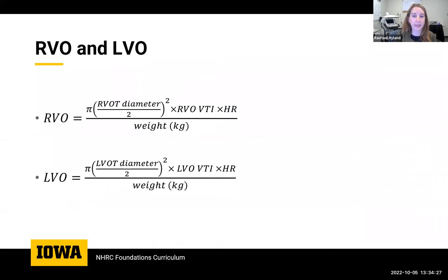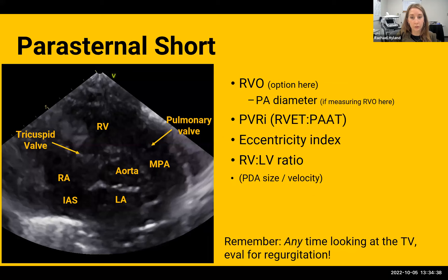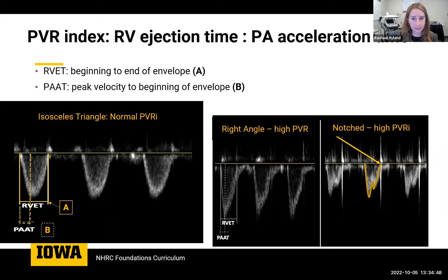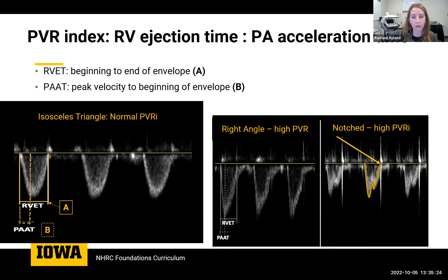To calculate output, plug in the VTI, heart rate, and diameter. Moving on to the parasternal short for the PVR index, the eccentricity index, and the RV to LV size. The PVR index is another good one to measure with the horizontal sweep elongated for better accuracy. You'll measure at the Doppler of the pulmonary artery just below the valve. There can be more beat-to-beat variability here, so get in the habit of measuring two to three beats and averaging them. As the angle of your PAT increases, that's a marker of increased resistance.